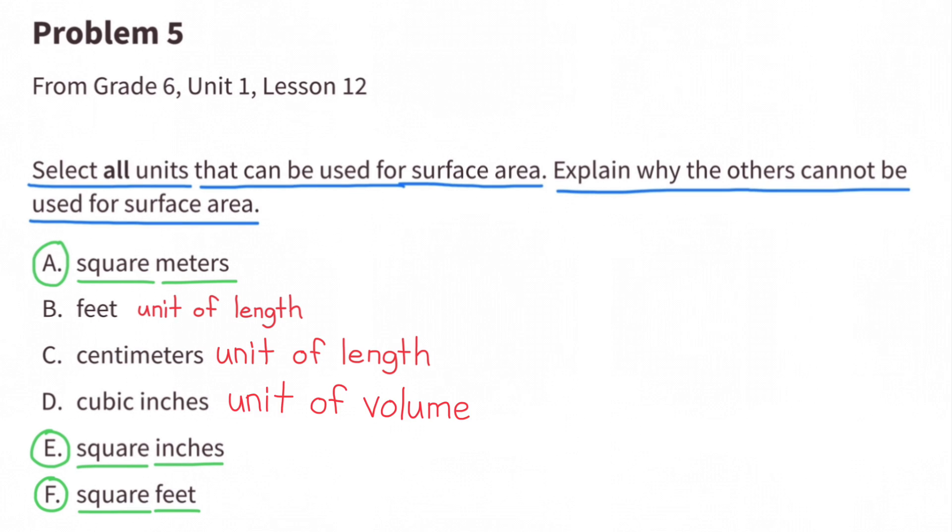And D. Cubic inches. That's a unit of volume and cannot be used for surface area. Volume measures the amount of space that a substance or an object occupies. For example, a container. Volume has three dimensions. Base times height times length.